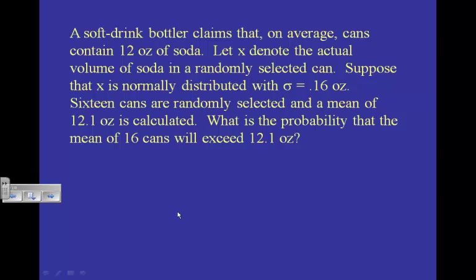A soft drink bottler claims that on average cans contain 12 ounces of soda. Let X denote the actual volume in a randomly selected can. X is normally distributed with a standard deviation of 0.16, 16 cans are randomly selected, and they have a sample mean of 12.1.